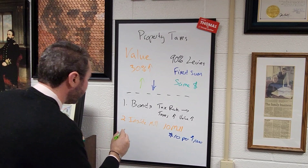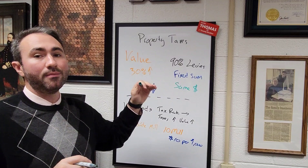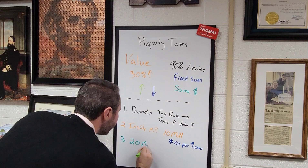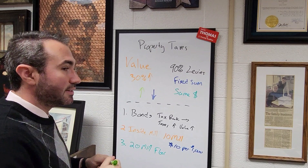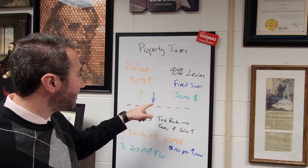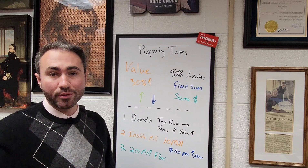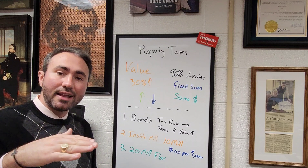The last example of why your tax rate may stay the same or not decrease as much when values increase is something called the 20 mill floor. Every school district in the state of Ohio is guaranteed at least 20 mills worth of revenue. As values increase, we decrease the tax rate — that's called the effective tax rate — and over the years, as more values increase and no new levies are added, that effective rate becomes lower and lower to bring in the same amount of revenue.